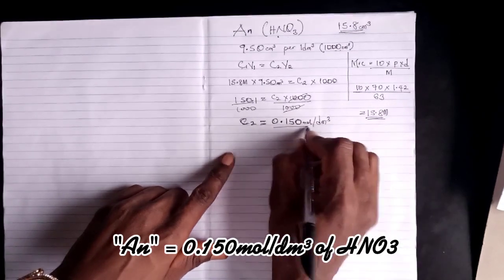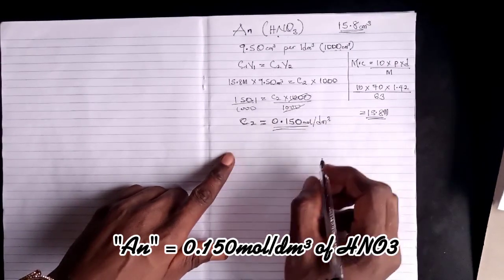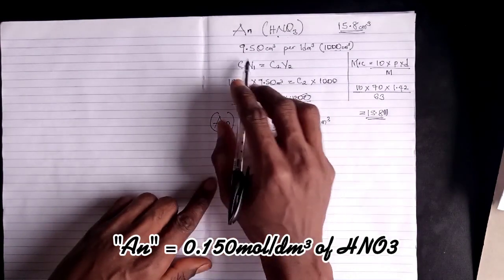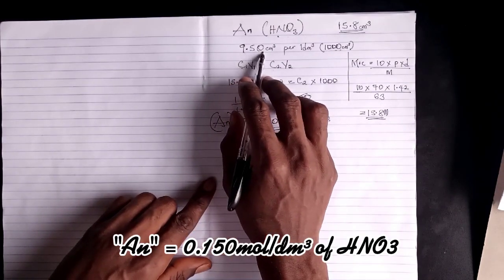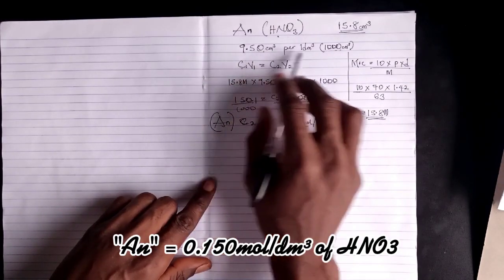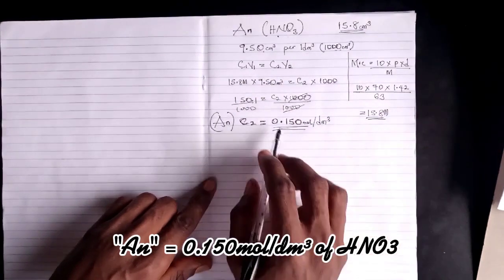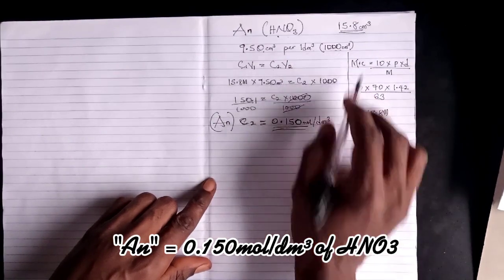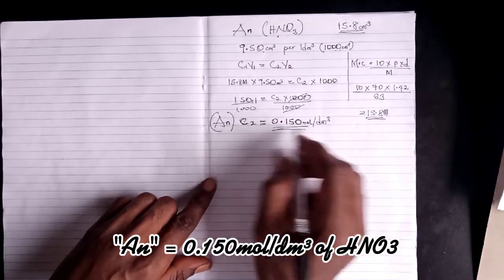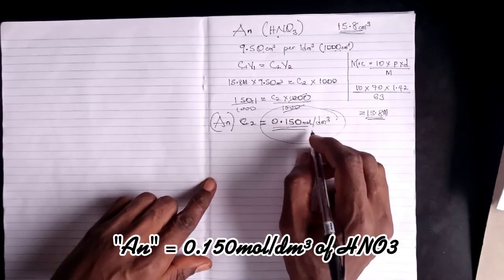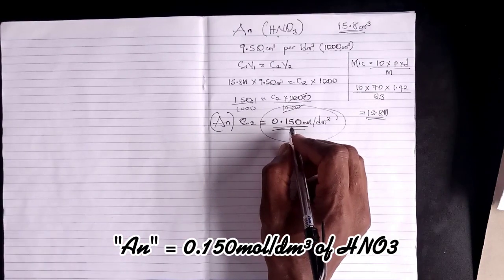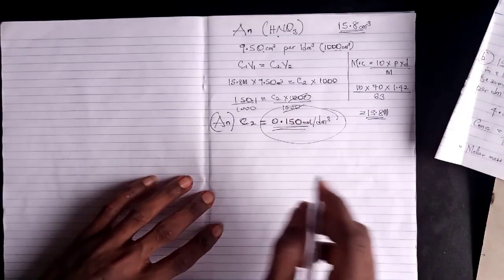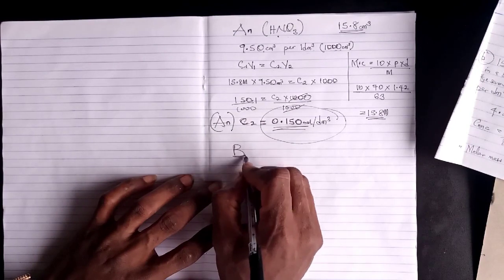So this is the concentration of AN: 0.150 mol/dm³. If you measure out 9.50 cm³ and dilute to 1000 cm³, this will be the final concentration of the solution. We will now move over to calculate the concentration of our BN.